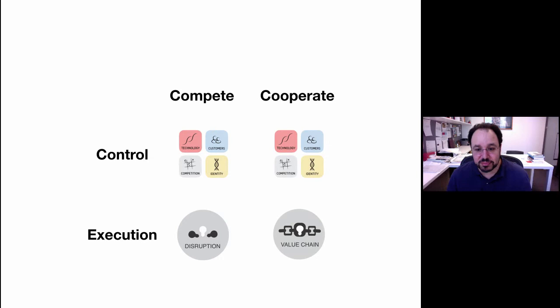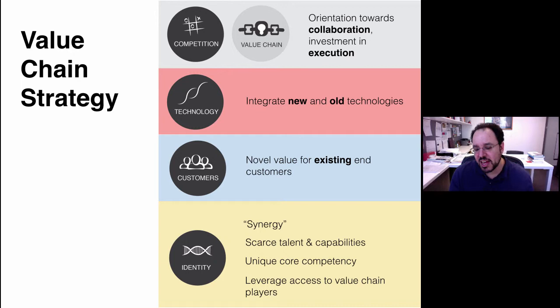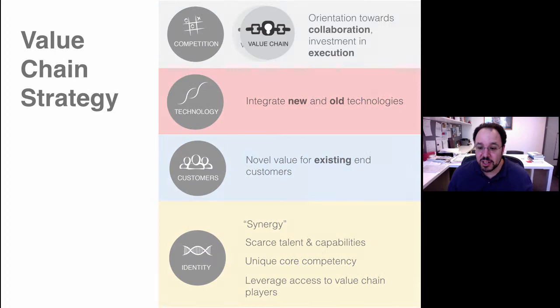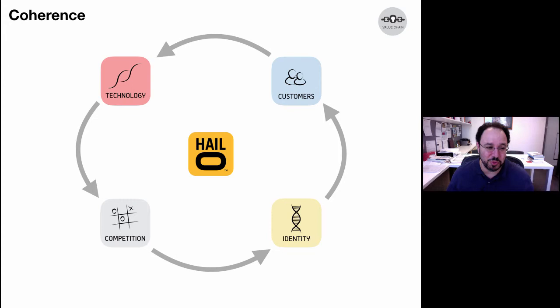When you cooperate and execute, we call this a value chain strategy. You're oriented towards collaboration, trying to integrate old and new technologies together. You still need a novel value proposition, but directed at incumbent customers. You see words like synergy, leveraging scarce talented capabilities, having a unique core competency, and leveraging access across the value chain to have a bottleneck position. Haleo tried to do this — its customers were taxi companies and their customers, leveraging off their technology, not competing with them, with an identity that regulations are manageable and we can work with them to bring value.